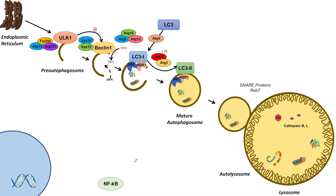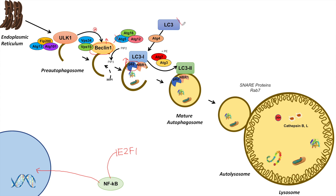The last transcriptional regulator is NF-κB or nuclear factor kappa B, and like XBP1, NF-κB can have a dual regulatory effect on the macroautophagy pathway. When NF-κB enters the nucleus, it can upregulate Beclin-1 and P62. However, it can also inhibit macroautophagy by suppressing E2F1, which is a transcriptional activator of macroautophagy. E2F1's targets include ATG5, LC3, and ULK1, so NF-κB, by suppressing E2F1, can suppress ATG5, LC3, and ULK1.